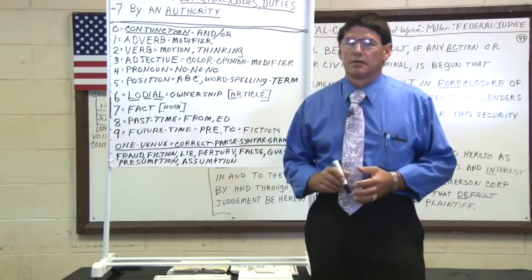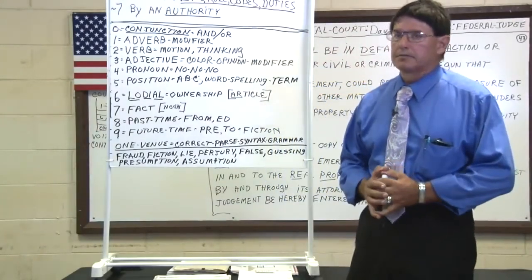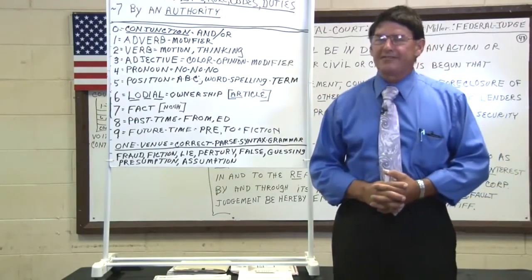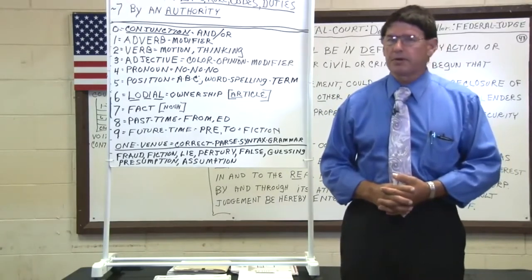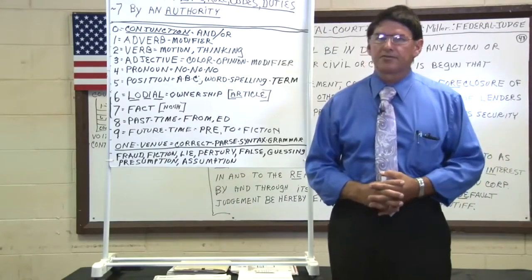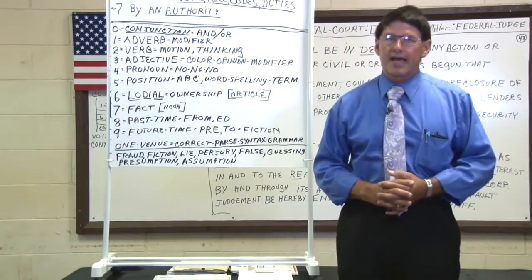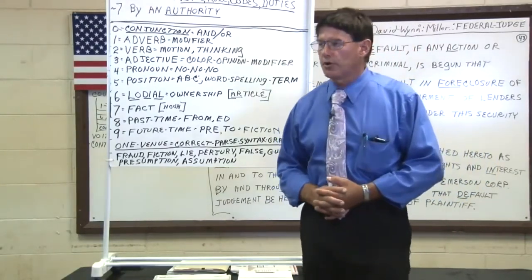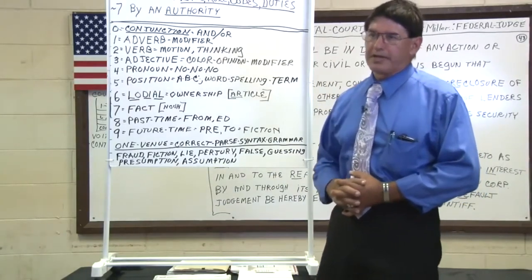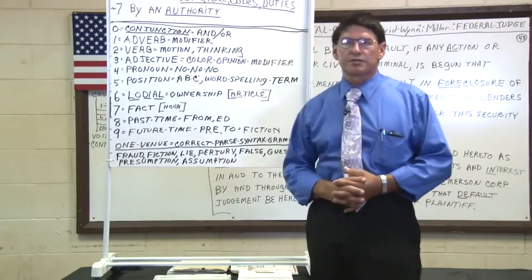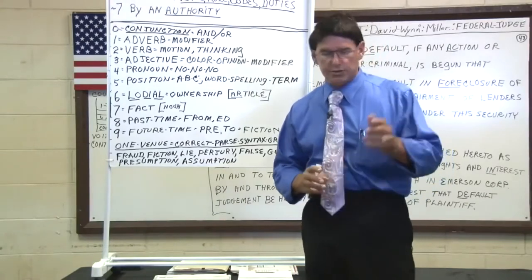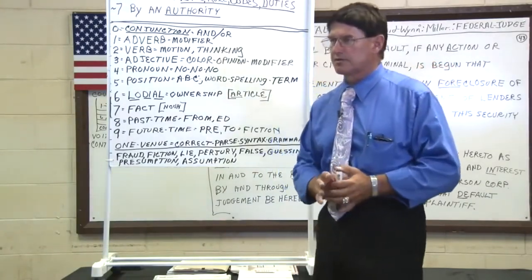Good afternoon ladies and gentlemen, we are here in Maui, Hawaii. My name is Federal Postal Judge David-Wynn:Miller. I punctuate my name with a full colon because it creates a prepositional phrase. I use a hyphen to make David Wynne a compound fact, then follow that with a full colon to identify my surname, Miller — meaning 'for the David Wynne of the Miller family,' because full colons are prepositional phrases to express a fact, as you also use in digital time.